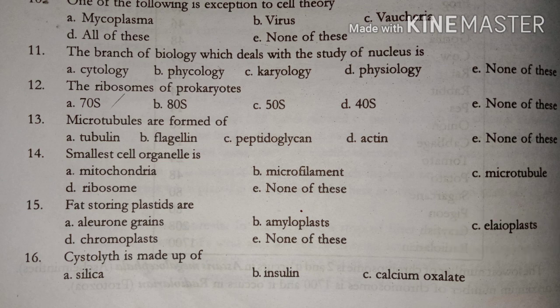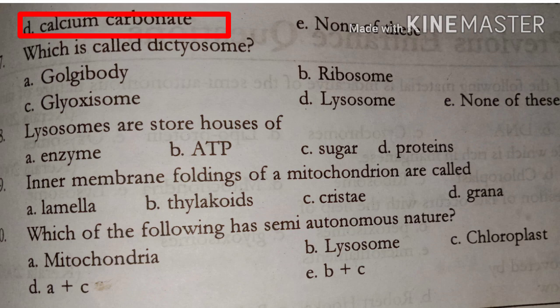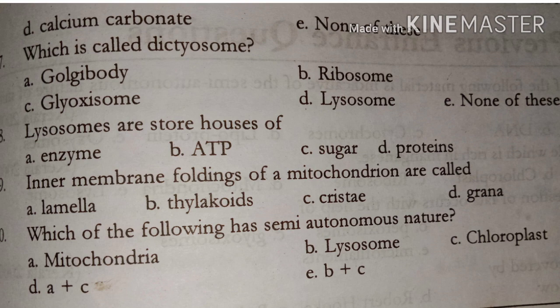Systolith is made up of Answer Option D: Calcium Carbonate. Which is called Dictiosomes — Answer Option A: Golgi Bodies.